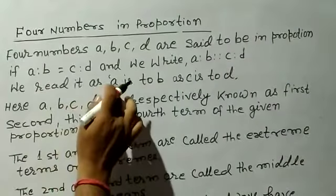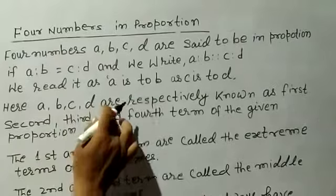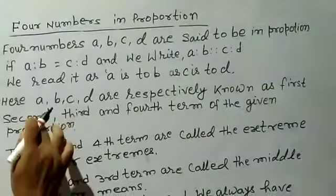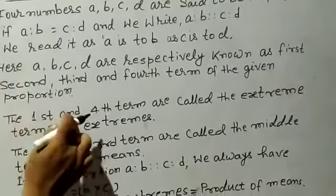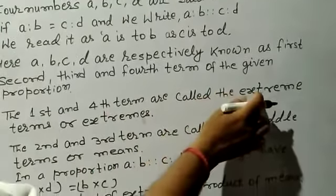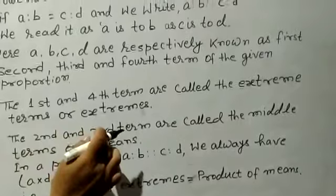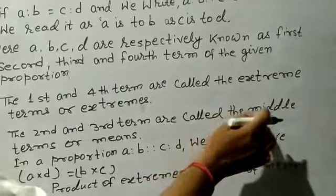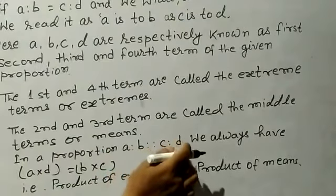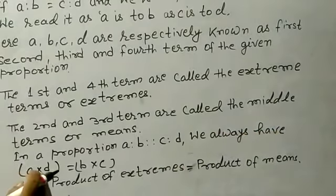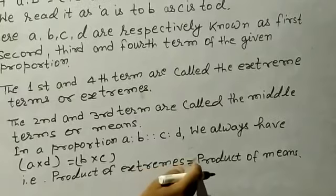We read it as A is to B as C is to D. Here A, B, C, D are respectively known as the first, second, third, and fourth term of the given proportion. The first and fourth terms are called the extreme terms or extremes; the second and third terms are called the middle terms or means. In a proportion A:B :: C:D, we always have A into D equal to B into C — that is, product of extremes is equal to product of means.